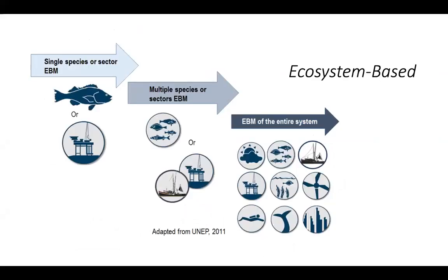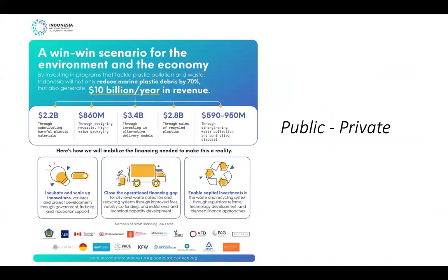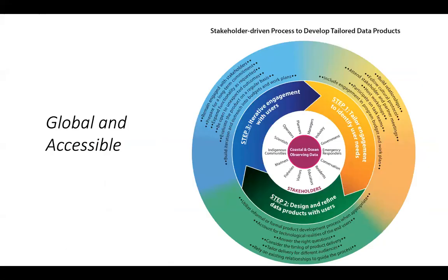We talk a lot about ecosystem-based management — not just looking at a single species, but how many species interact together. Rights-based management is also increasingly important, thinking about how property rights and allocations in fisheries can lead to better management. There's increasing use of public-private partnerships to drive ocean innovations, with really interesting work happening on plastics in particular. And people are increasingly realizing that ocean management needs to be globally driven and globally accessible, engaging a broader range of stakeholders.